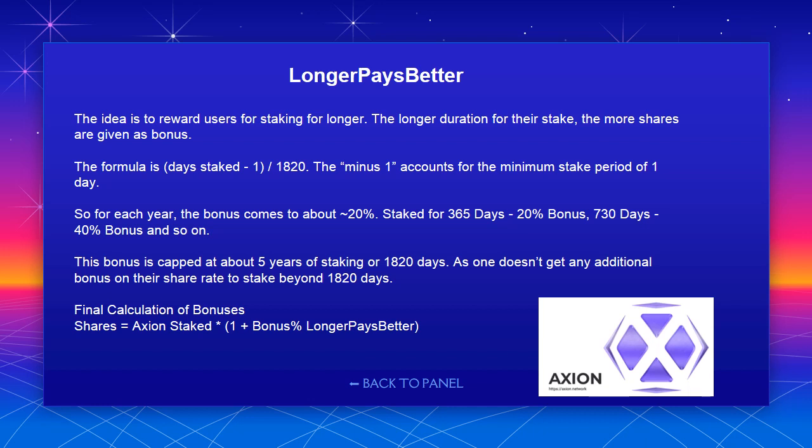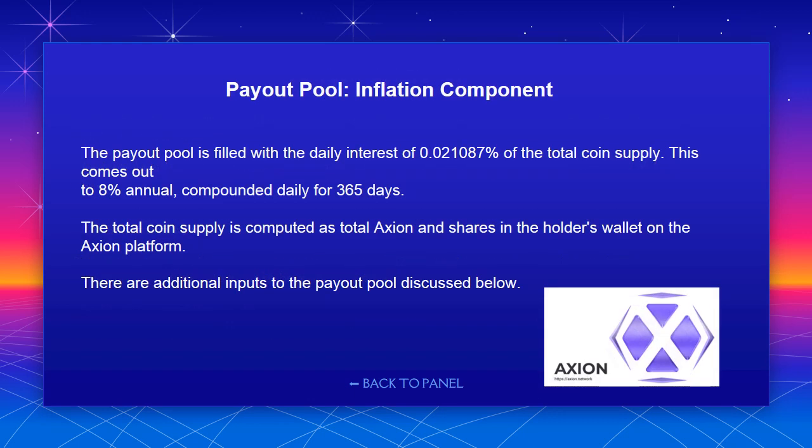Final calculation of bonuses: shares = (Axion staked) × (1 + bonus percent from longer pays better). Payout pool inflation component: the payout pool is filled with the daily interest of 0.021087% of the total coin supply. This comes out to 8% annual, compounded daily for 365 days. The total coin supply is computed as total Axion and shares in the holder's wallet on the Axion platform. There are additional inputs to the payout pool discussed below.